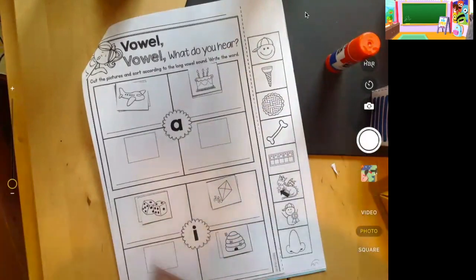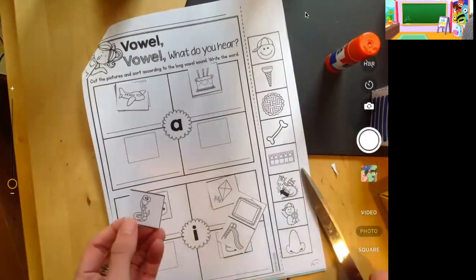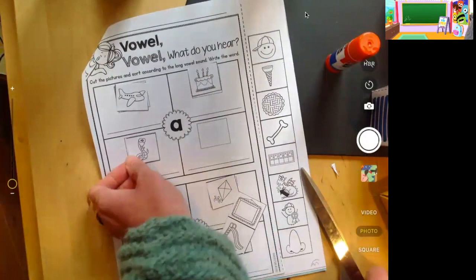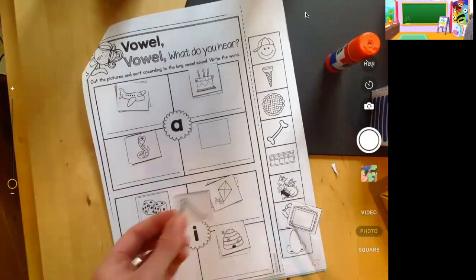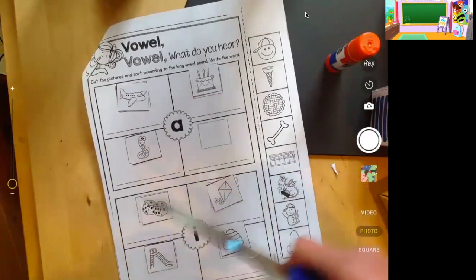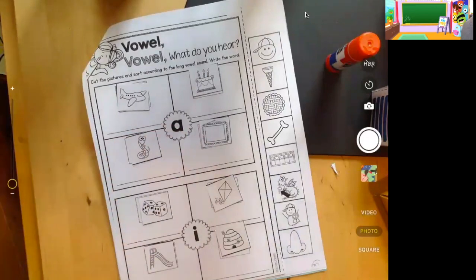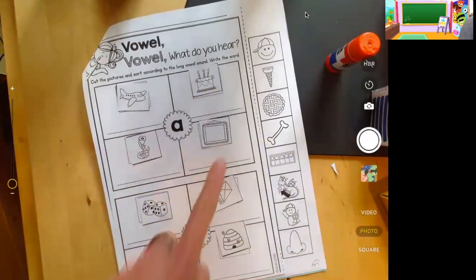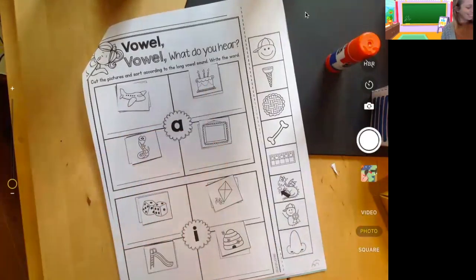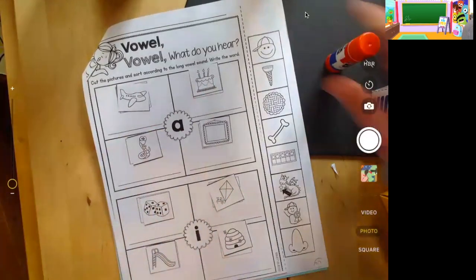And then I have hive. Hive goes here. And then I have snake, k-a-ke, slide, and frame. I've got them all. I'm going to make sure. Plane, cake, snake, frame. Yep, those are all A. And then dice, kite, slide, hive. Yep, those are all I.